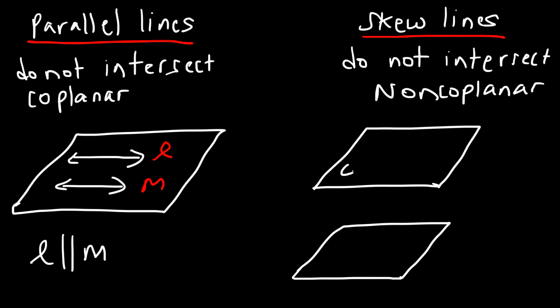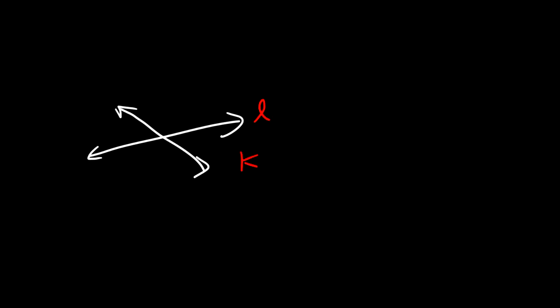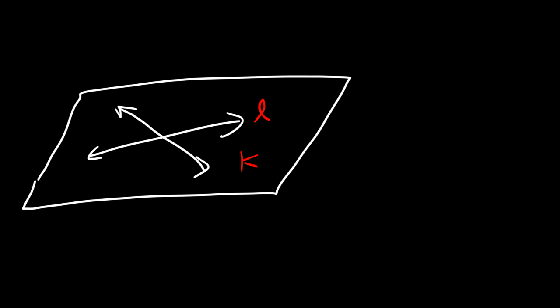Now consider two parallel planes that contain two lines — let's say line J and K. So J and K are skew lines: they exist in different planes and as a result they cannot intersect because they're not coplanar. Keep in mind, if you have two intersecting lines they will determine one plane, so two intersecting lines are coplanar. Because skew lines are non-coplanar, they can never intersect.